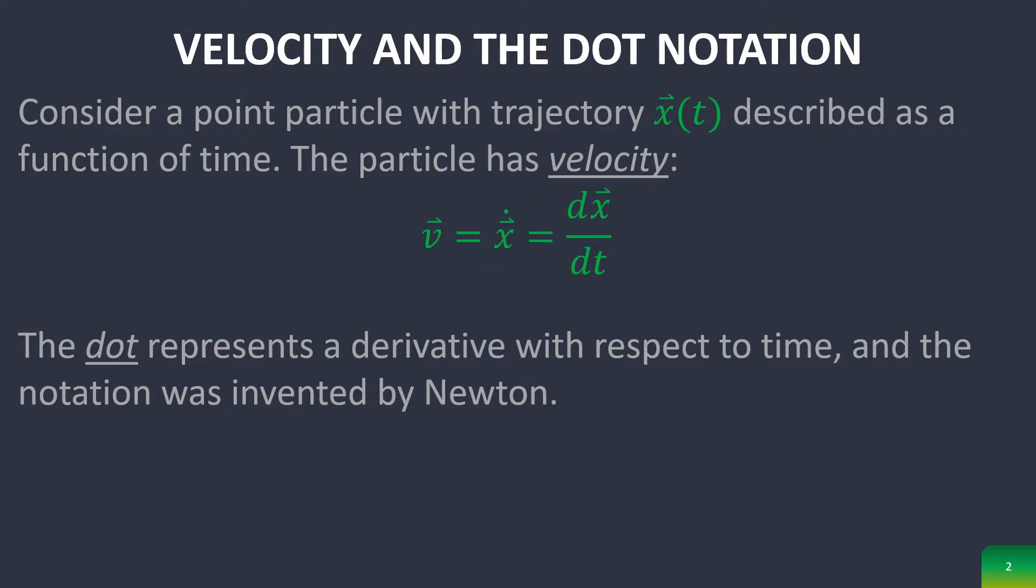We start with velocity and the dot notation. Considering a point particle with trajectory x(t) described as a function of time, the particle has velocity, where we use the dot to represent the time derivative. This was invented by Newton, but it did not become standard.